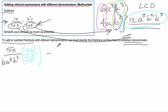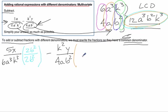Then for this term, we have k squared y divided by 4ab squared. What do we multiply by to give it the denominator 12a cubed b squared k cubed? We need a 3 to make the 4 into 12. We need an a squared to get a to the third. The b squared is already there. And we're going to have to multiply by k cubed. Of course, that's going to be exactly the same on top.